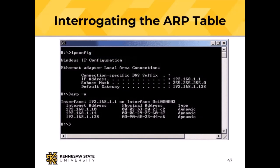If you open a command window on a Windows 10 or 11 machine and type 'ipconfig,' it will tell you a lot about the current configuration. This machine is at address 192.168.1.1, subnet mask 255.255.255.0 — meaning the first 24 bits are the network address and only the last 8 bits are the host address. The default gateway is at host 138. Typing 'arp -a' shows the contents of the cache: 192.168.1.18 is at a particular physical address, and so on.